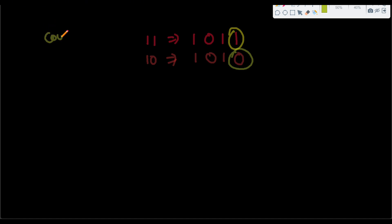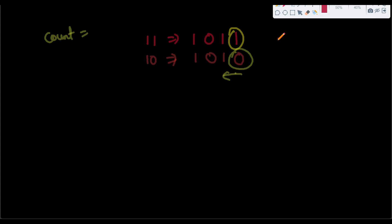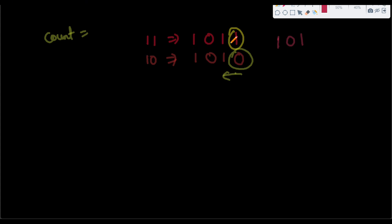We take a count variable and whenever we see a 1, we increment the counter by 1. Then we get rid of that bit by dividing the number by 2. For example, 11 divided by 2 gives us 5, and the binary representation of 5 is 101 — that's how we remove the rightmost bit. Each time we see a 1 we increment count and divide, continuing until the number becomes 0.